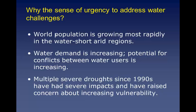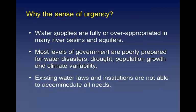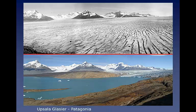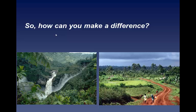Why the sense of urgency to address these water challenges? The world population is growing most rapidly in water-short regions. Water demand is increasing. The potential for conflict between water users is increasing. Climate and multiple severe droughts since the 1990s have raised concerns about our increasing vulnerability as a society. Water supplies are fully or over-appropriated in many river basins and major aquifers around the world. Most levels of government are poorly prepared for water disasters, drought, and the increasing water needs due to population growth and climate variability. Existing water laws and institutions are not able to accommodate all of the needs. And then there's the issue of climate change and its impact on water resources.